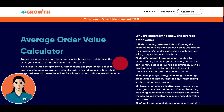Imagine you run a clothing store. A high AOV for your business could mean customers are buying multiple items per order, like a complete outfit. Conversely, a lower AOV might suggest they are just grabbing a single product. If you run a promotion encouraging customers to buy a matching top and pants, you'd expect an increase in AOV during that campaign. A stagnant or declining AOV might suggest your promotions aren't enticing customers to purchase more.